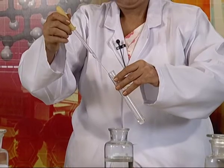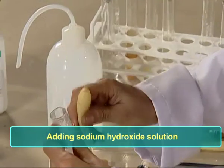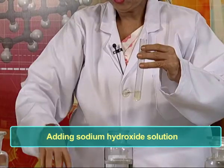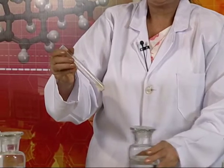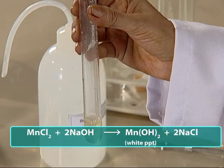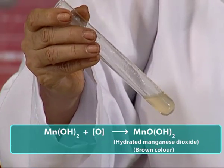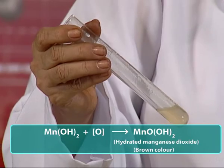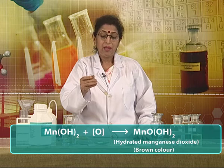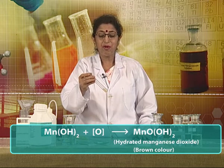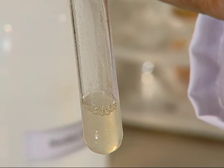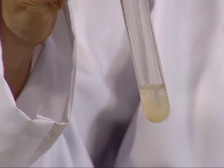In this solution, we add sodium hydroxide solution to see what happens. A white color precipitate appears because of the formation of manganese hydroxide. Due to atmospheric oxidation, this white precipitate rapidly converts into a brown precipitate, which is due to the formation of hydrated manganese oxide. This precipitate confirms the presence of manganese ions in the given salt.